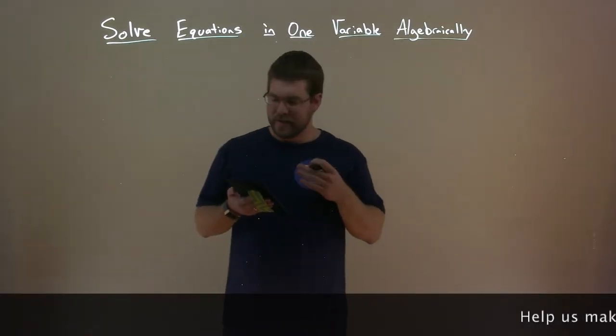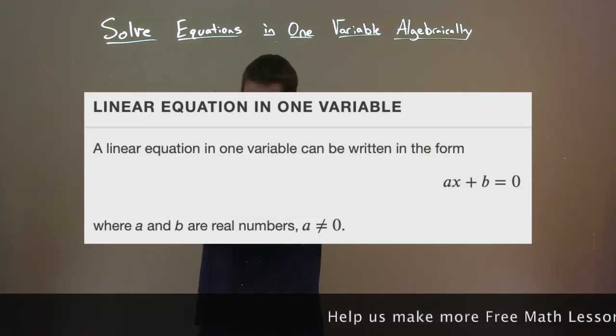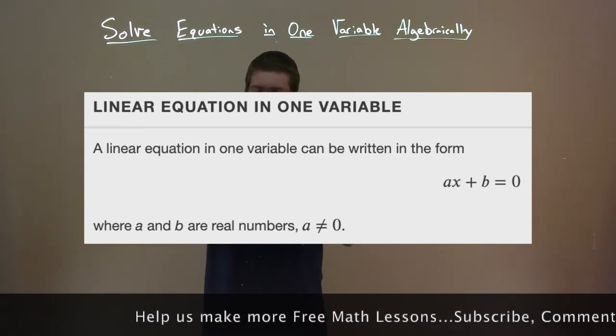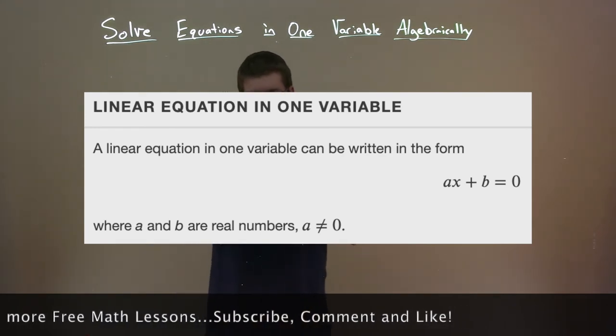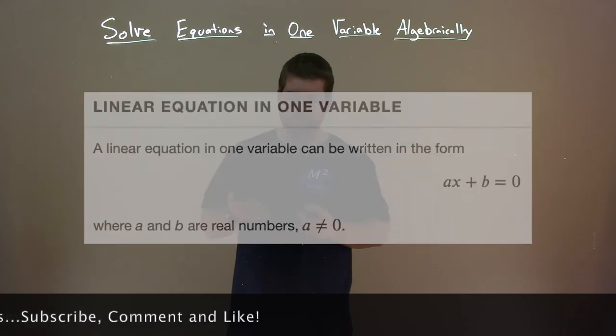Let's start off here with a definition. Linear equation in one variable. A linear equation in one variable can be written in the form Ax plus B equals 0, where A and B are real numbers and A does not equal 0.